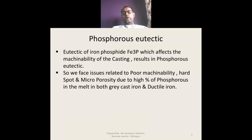Hard spots and micro porosity arise due to high percentage of phosphorus in the melt, in both gray cast iron as well as ductile iron. It is very important to control phosphorus within the given range for both gray cast iron and ductile iron.